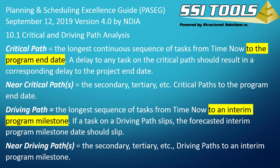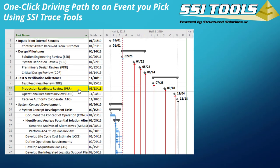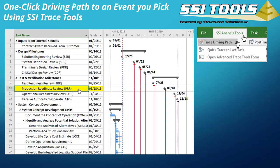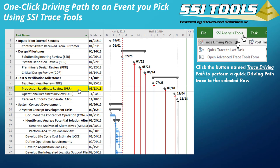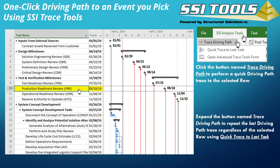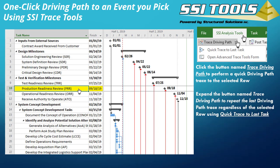I have a few more presentation slides showing how this is done using SSI Tools, then I'll demonstrate SSI Tools using an example schedule. Here's an example schedule and I have selected row 10 — it's not the end of the project, rather it's an interim milestone named Production Readiness Review. I still want to see why it finishes on September 18th, and SSI Tools will show that analysis with just one click. With any row selected in Microsoft Project, click the button named Trace Driving Path below SSI Analysis Tools to perform a quick driving path analysis to the selected task or milestone.